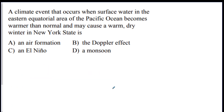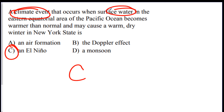A climate event that occurs when water in the eastern equatorial area of the Pacific Ocean becomes warmer than normal and may cause a warm, dry winter in New York — the answer is C: El Niño. It's a climatic event where water in the equatorial area becomes warmer or colder because those trade winds are either increasing or decreasing, sloshing warm water in different directions and causing the climate to shift.